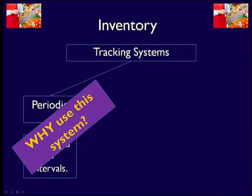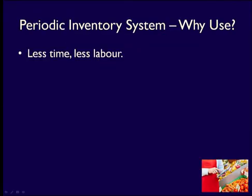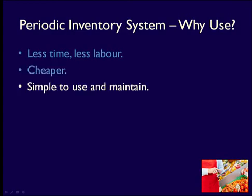Why would anyone choose to use the periodic inventory system to track their inventory, when you can see that there are negatives? Because it's cheaper. You spend less time and less labor on continually keeping up the inventory records. It is also cheaper because you don't need a complex computer system to record all your inventory purchases and sales. You can get by using a simple cash register. It is also a much simpler system to maintain.